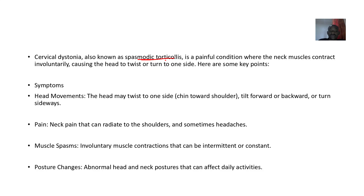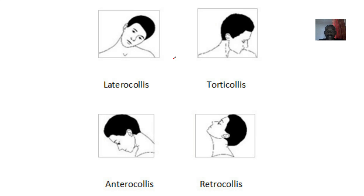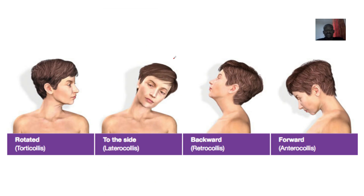This involuntary contraction will cause your head to twist or turn to one side. If it turns to the lateral side, that's called lateral collis. If it turns to the front, that's anterior collis. If it turns to the back, that's retro collis. And if it just turns halfway, that's torticollis. Those are the types.